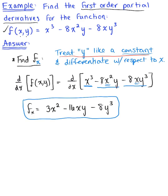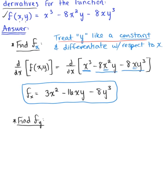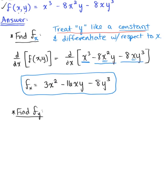Now we want to find the partial derivative of the function with respect to y. Just as with the first partial derivative, it is essential to keep in mind what we are differentiating with respect to — here, it's y. So we are going to treat the variable x like a constant, and differentiate as if we have a single variable function with respect to y.